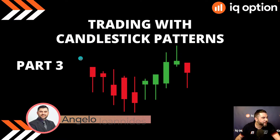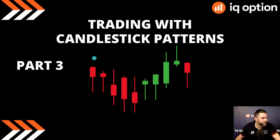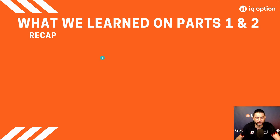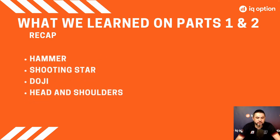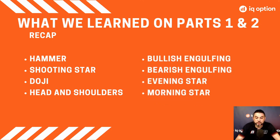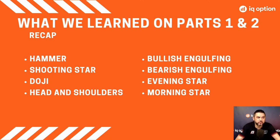In Part One and Two, we learned how to use the hammer, the shooting star, the doji, and then we saw the head and shoulders patterns. In Part Two, we saw the bullish engulfing, bearish engulfing, evening star, and morning star — very good patterns, all of them. Definitely learn them if you watched Parts One and Two. It's YouTube so you can always re-watch those videos.